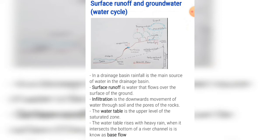Surface runoff is the water that flows over the surface of the ground. If you don't remember why it runs over the surface and doesn't infiltrate, please watch the video about factors of infiltration. Infiltration is the downward movement of water through the soil and the pores of the rock.